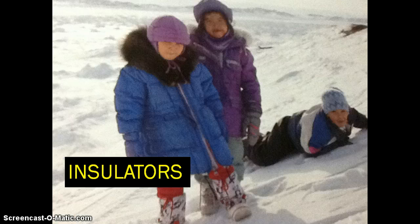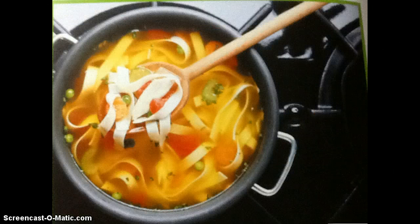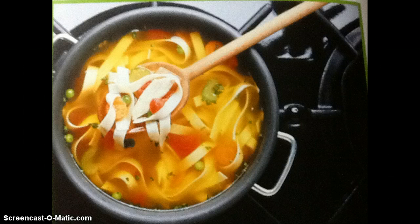Insulators are things that do not let heat or electricity pass through. Clothes are good insulators — they keep your body heat inside and the cold weather outside. Wooden spoons are good insulators. Heat from a pot of soup is not transferring through the wooden spoon. The wooden spoon remains cool so you can hold onto it while you stir.